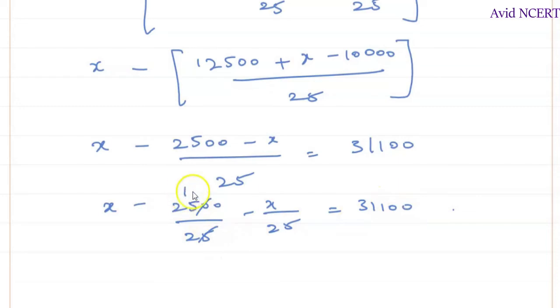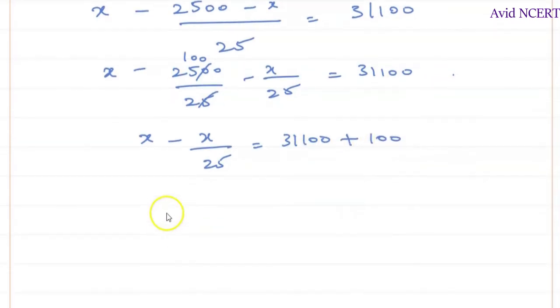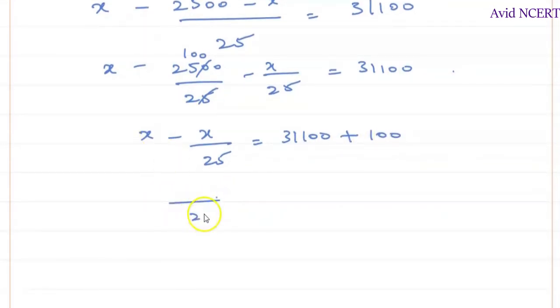So simplifying this, x minus x by 25 equals 31,100. You can take this 100 to the other side which is plus 100. So this can be written as 25x minus 1x equals 31,100 plus 100 equals 31,200.